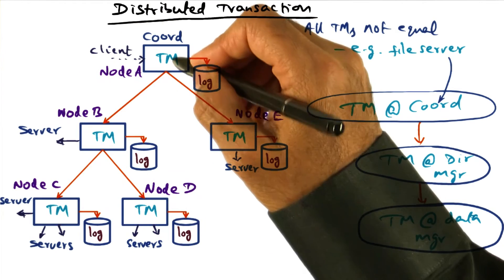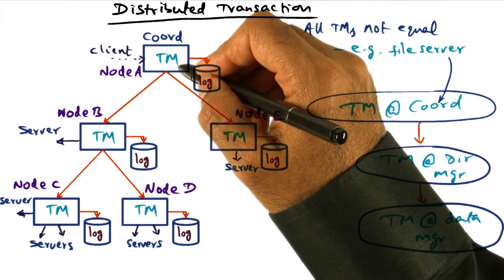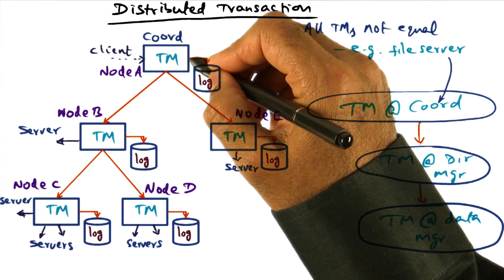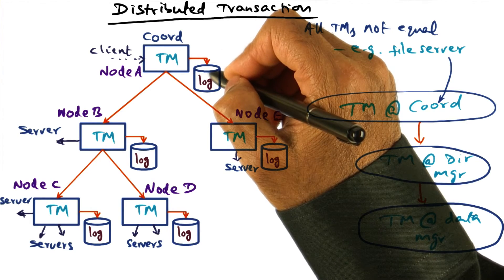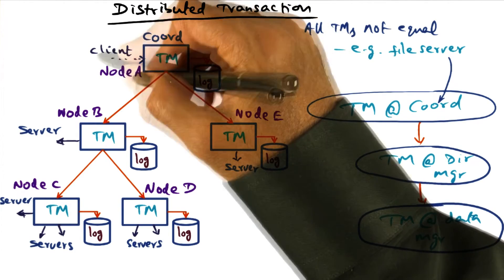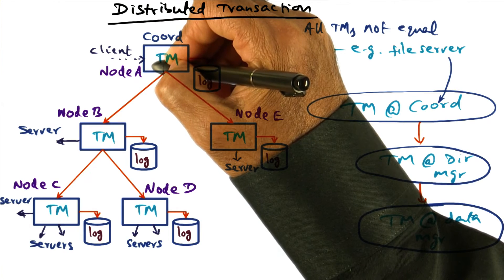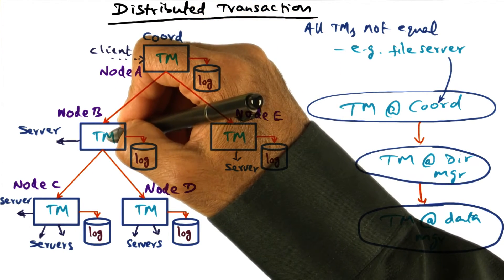Now, one of the things that the transaction manager at each node has to do is to log periodically to persistent store state that is created on behalf of the client or on behalf of the server.